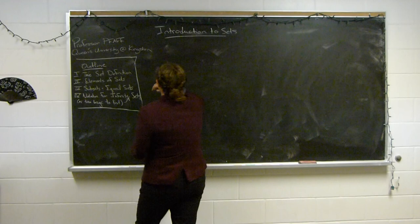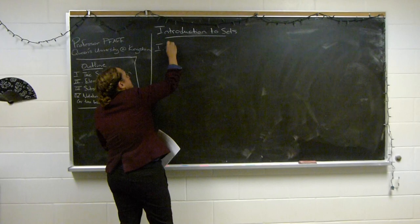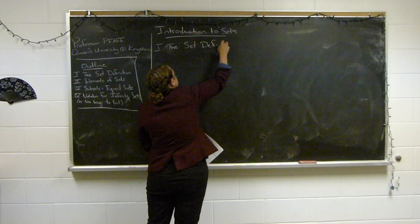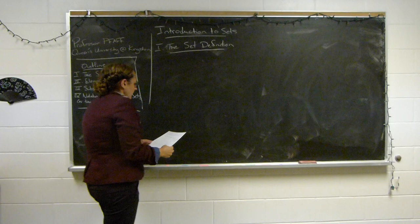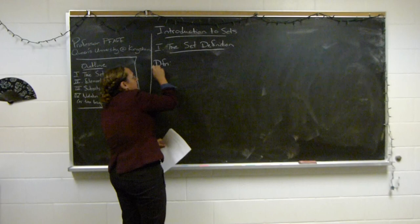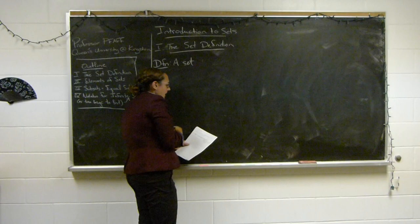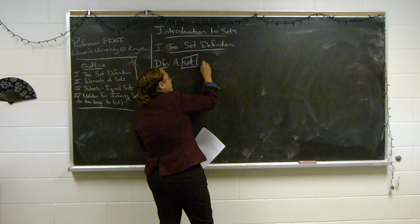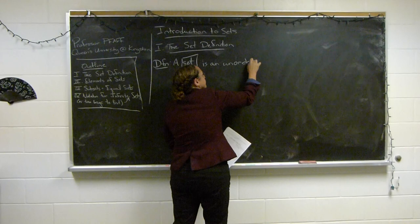Let's start with the set definition. I'm going to use this as an opportunity to practice breaking down a definition into its different parts to understand what it's saying. I'll do this in a number of the videos because understanding how to work with definitions is something that's a little tricky when you're starting out in higher math. So, a set is an unordered collection of distinct objects.